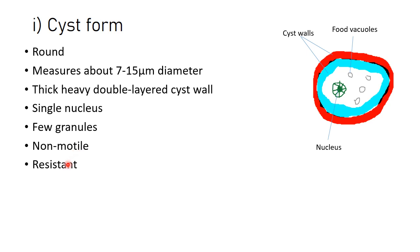The cyst form is non-motile, meaning it does not move. It is also resistant — when Naegleria fowleri is exposed to unfavorable conditions, it converts into the cyst form to survive.